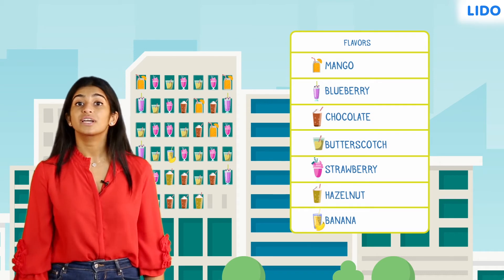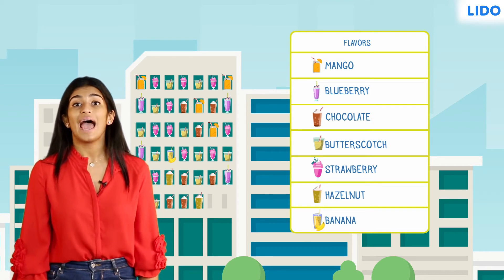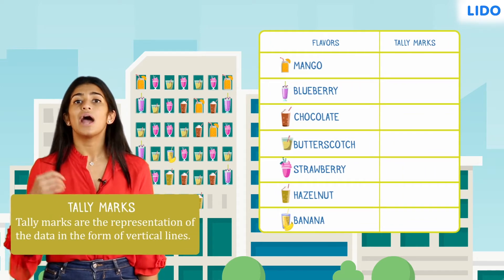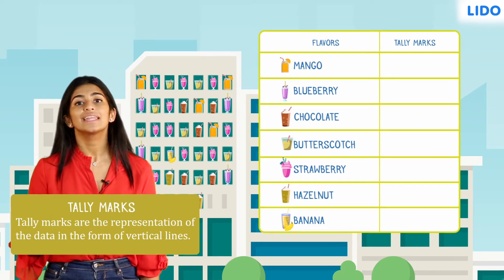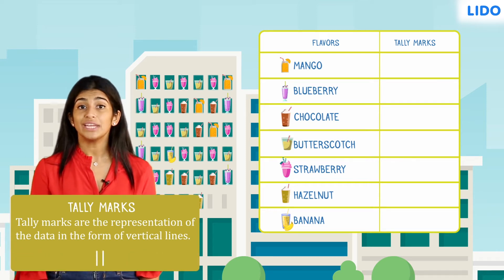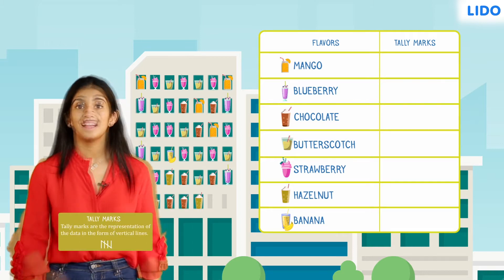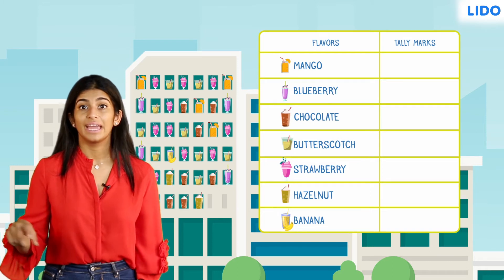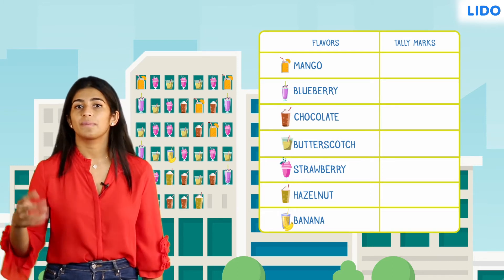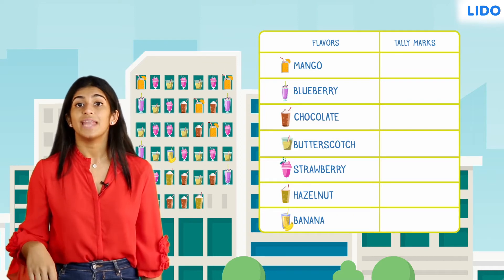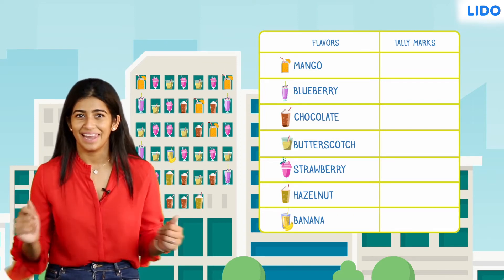To keep a record of the count of each flavour, we will add one more column for tally marks. Tally marks are a representation of the data in the form of vertical lines. We put one vertical line for each of the four counts and a diagonal line for the fifth count. Now, I'm going to read the information I collected in my survey. Each time we see a flavour, we will strike it from our book and add a standing line or a mark next to the flavour in our table. Let's go!